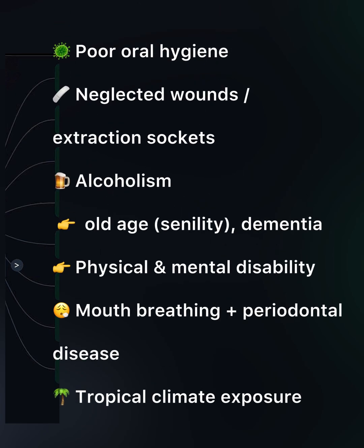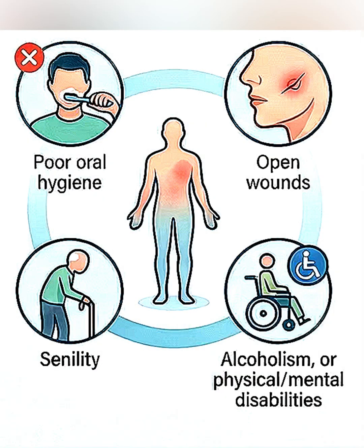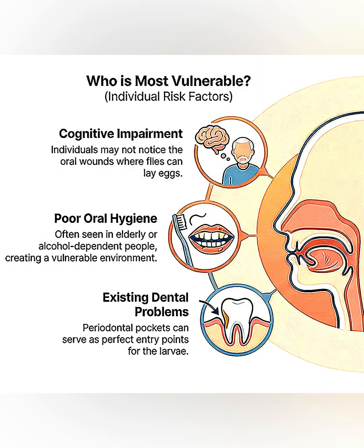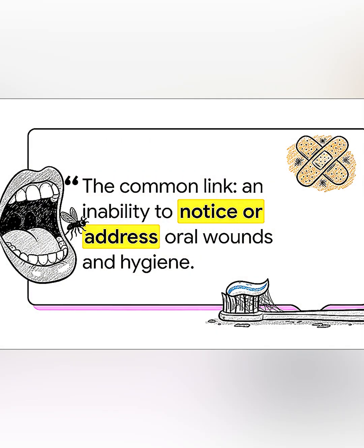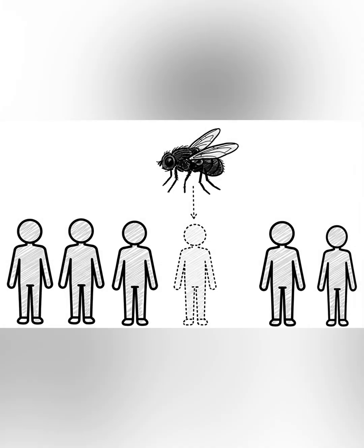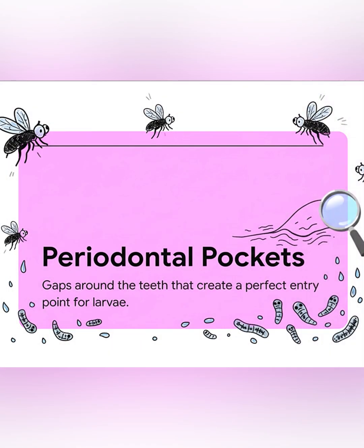There are very specific culprits and very specific victims. Why does it affect certain people more? People with cognitive impairment may not notice oral wounds. Elderly individuals with alcohol dependency often have neglected hygiene. Periodontal pockets give perfect entry points for infestation.